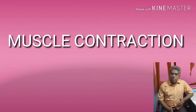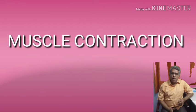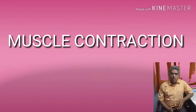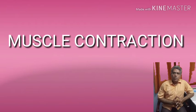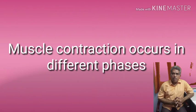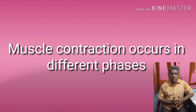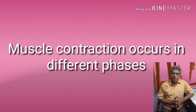For muscle contraction, calcium ions are required. Each and every muscle is innervated by an axon, and the space between the axon and the muscle is called the neuromuscular junction. This neuromuscular junction is also called the motor end plate, which secretes a neurotransmitter called acetylcholine.